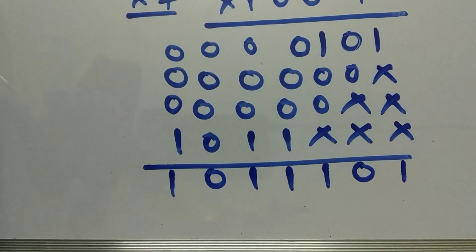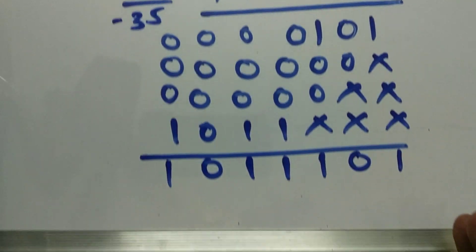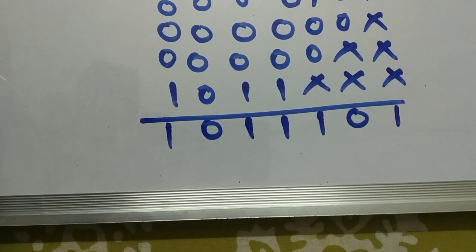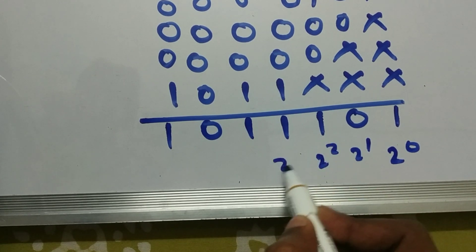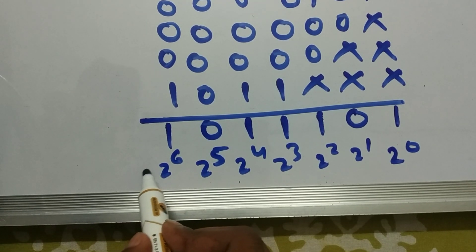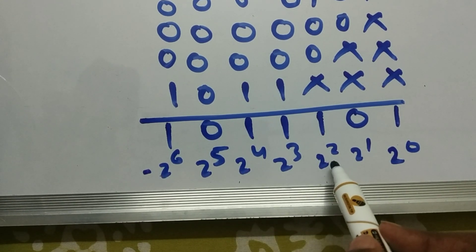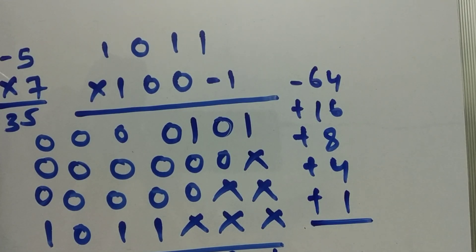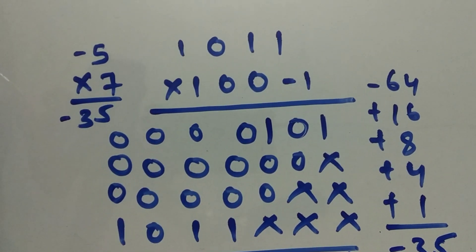The result is 10110101. This value should be -35, since -5 × 7 = -35. Let's verify: it is in 2's complement form, so we calculate -2⁶ + 2⁴ + 2³ + 2² + 2⁰, which equals -64 + 16 + 8 + 4 + 1 = -35. There we go — we confirmed that -5 × 7 = -35.